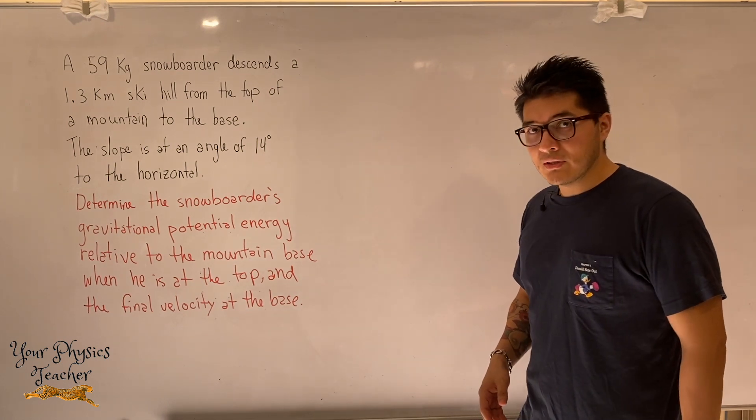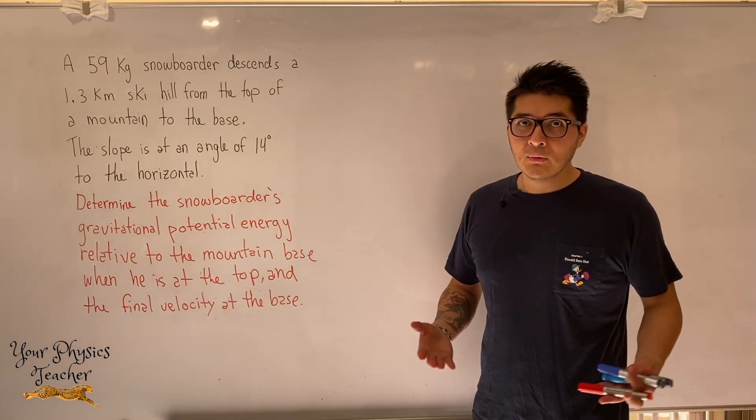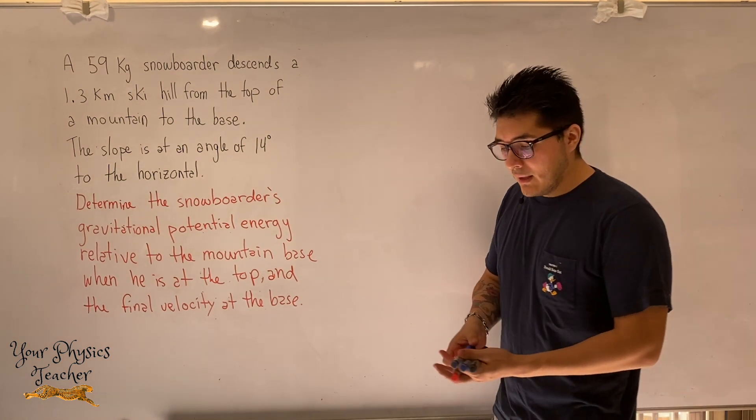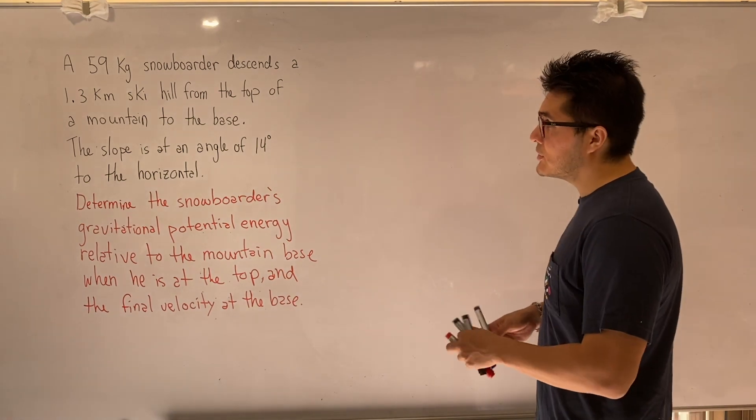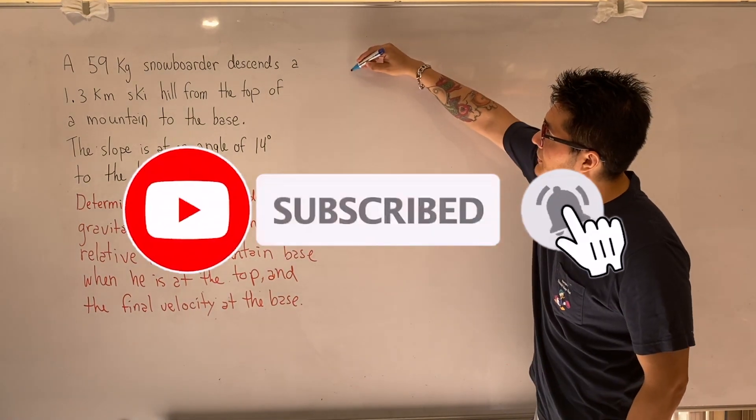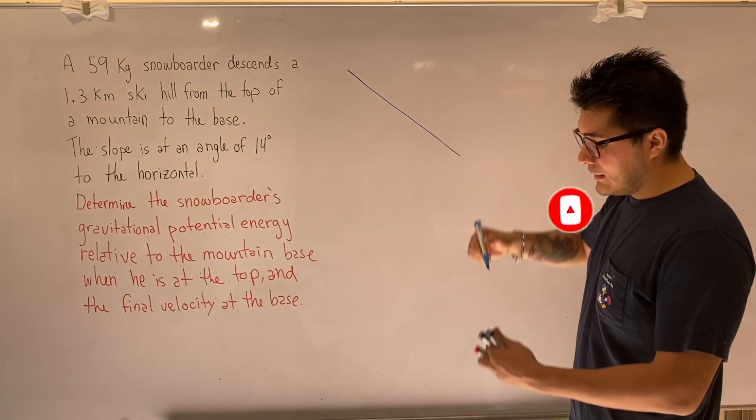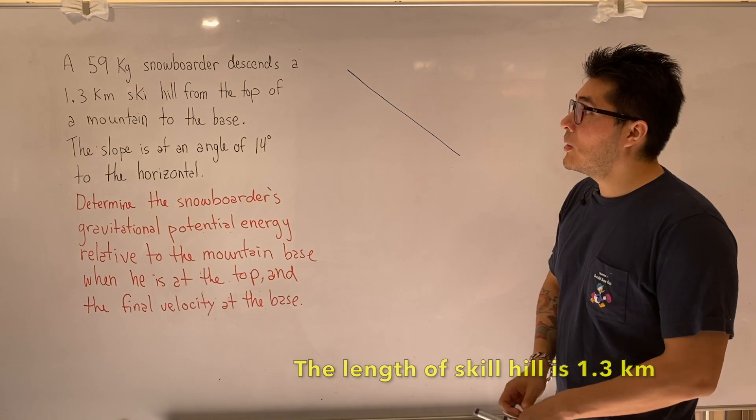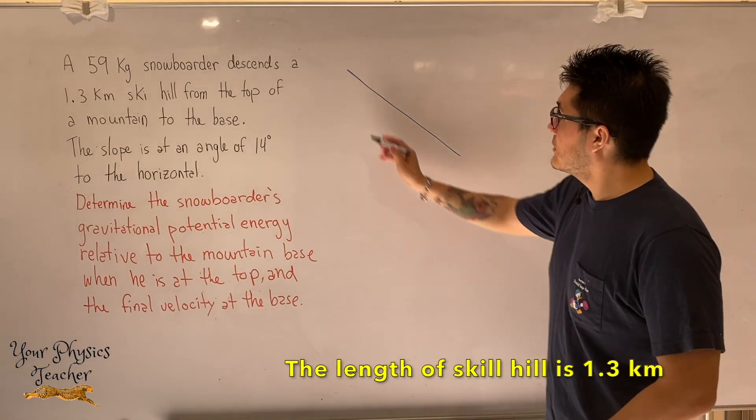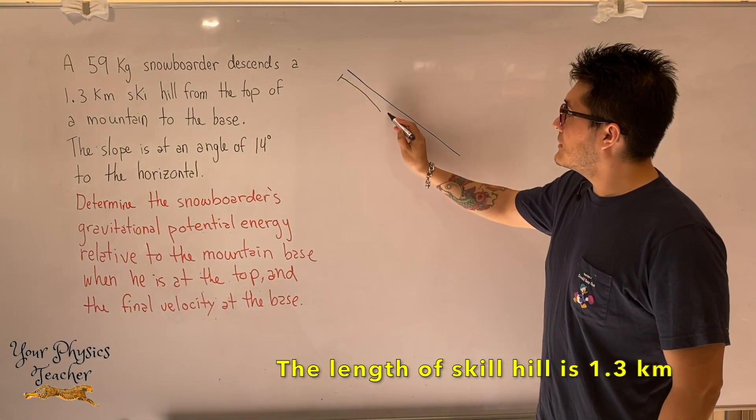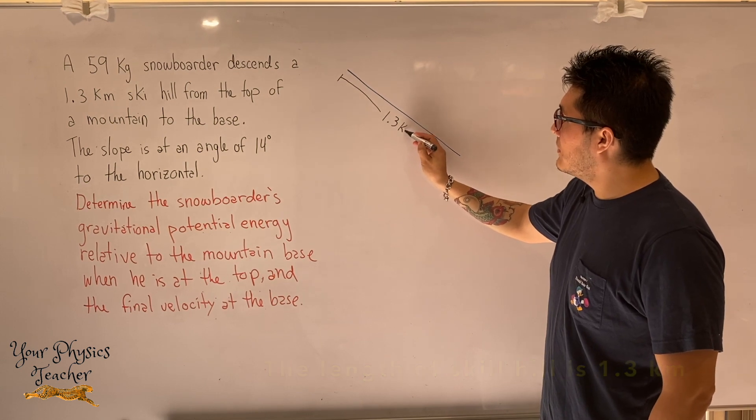So this is a conservation of energy question. As I've been telling you again and again, the best thing to do right away is to draw a diagram so we can visualize it better. We have a ski hill and the length of the ski hill is 1.3 kilometers.